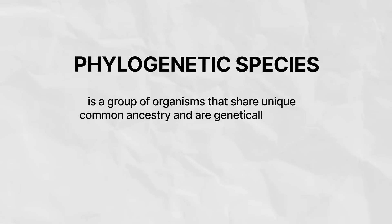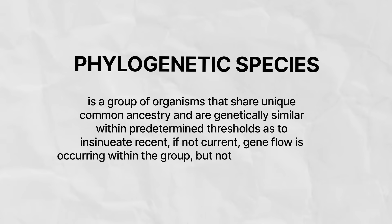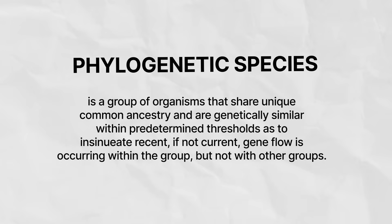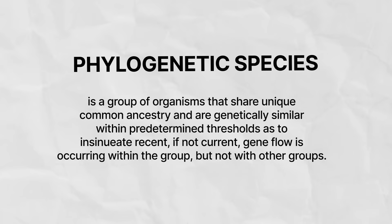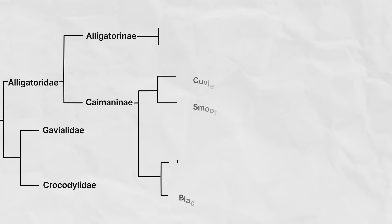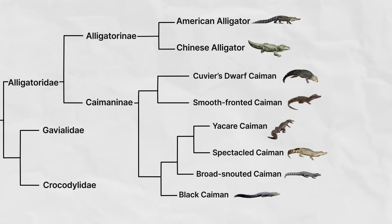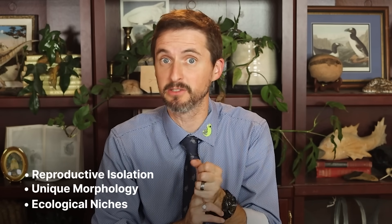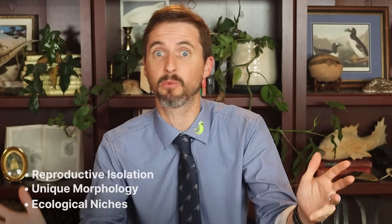But how do I use it to define a species? Well, in a nutshell, a phylogenetic species is a group of organisms that share unique common ancestry, and are genetically similar within predetermined thresholds, as to insinuate recent — if not current — gene flow is occurring within the group, but not with other groups. Basically, each tip of a phylogeny is a unique species, at least if you include all of their close relatives on that phylogeny. The biggest downside to the phylogenetic species concept is simply that phylogeny is somewhat foreign to most people. The same people that understand reproductive isolation, unique morphology, and ecological niches may not really understand what phylogenetics is, how it works, or why it's so powerful. My solution is just to try my darndest to explain phylogenetics to the world.